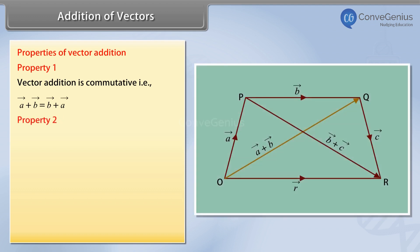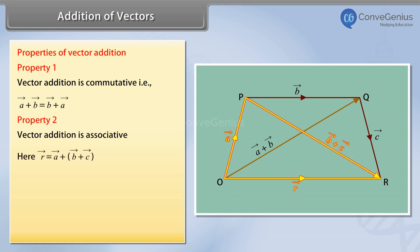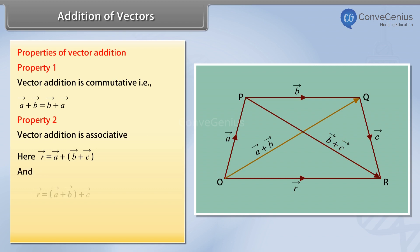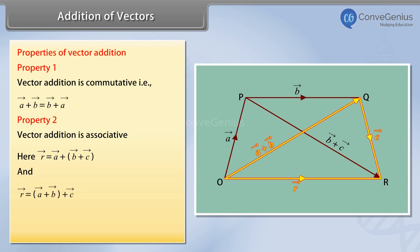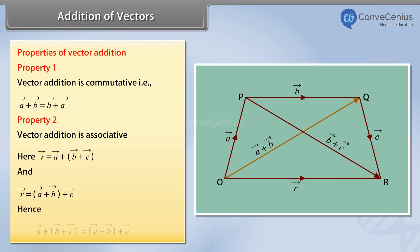Property 2: Vector addition is associative. Here, vector R is equal to vector A plus vector B plus vector C. Hence, vector A plus (vector B plus vector C) is equal to (vector A plus vector B) plus vector C.